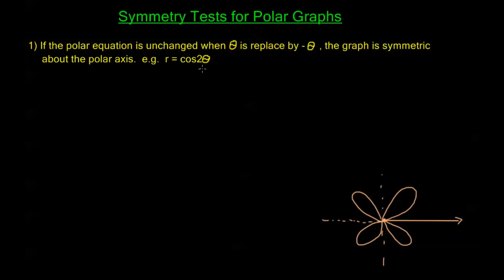Now the way that we test this is we see if the actual equation, not the graph, we see if the equation is unchanged if we replace theta with negative theta. Now anything that is cosine is going to be symmetric about the polar axis because cosine is an even function.